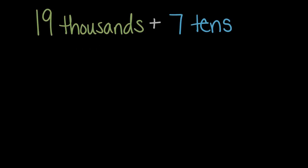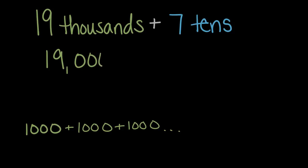So 19 thousands would quite literally be if we had 1,000 nineteen times. So there's 1,000 one time. If we had 1,000 two times, we would have 2,000. If we had 1,000 three times, we would have 1,000, 2,000, 3,000. And the pattern here should be pretty clear. If we had 19 thousands or 1,000 nineteen times, we would have 19,000. So 19 thousands is literally 19,000.